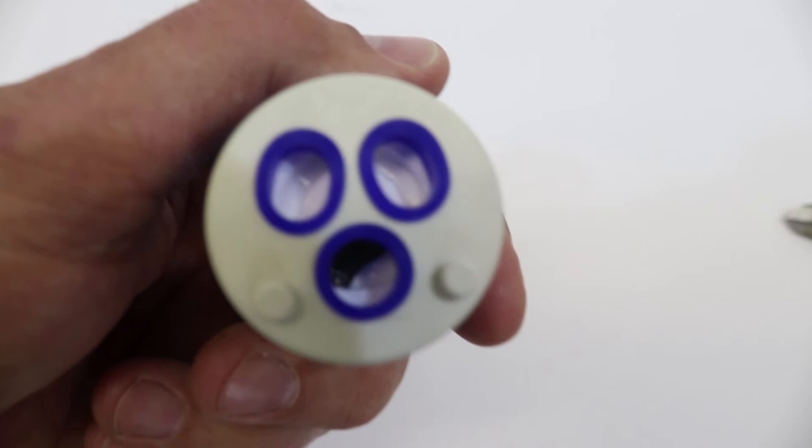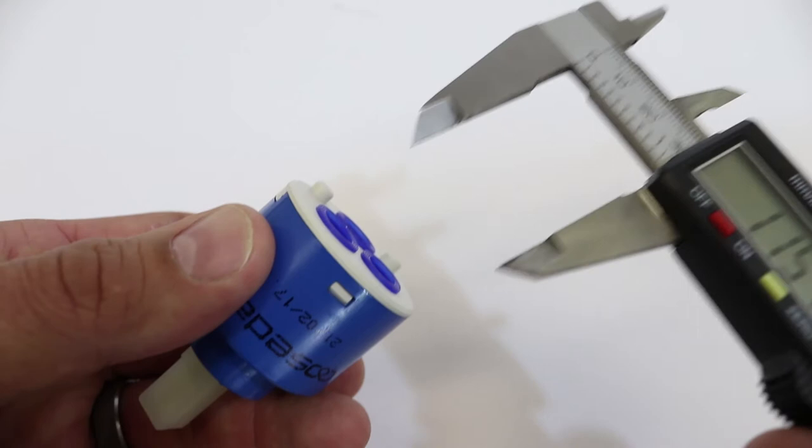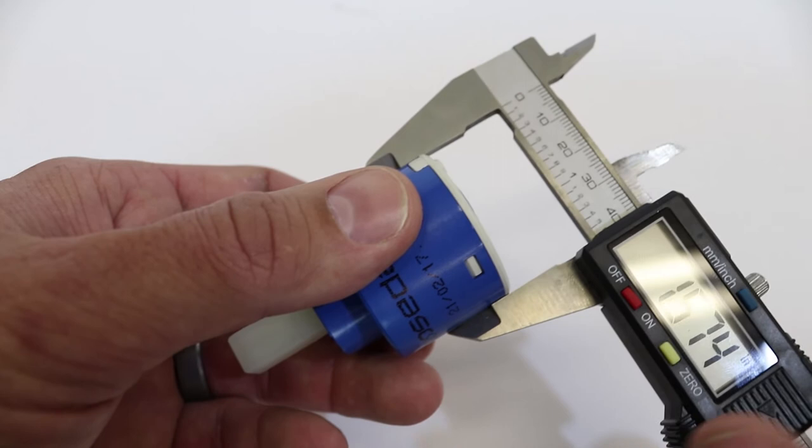As far as the sizing, we're going to take a measurement here. The diameter, about an inch and a half, a little over. Really it's considered a 40mm cartridge, diameter wise.